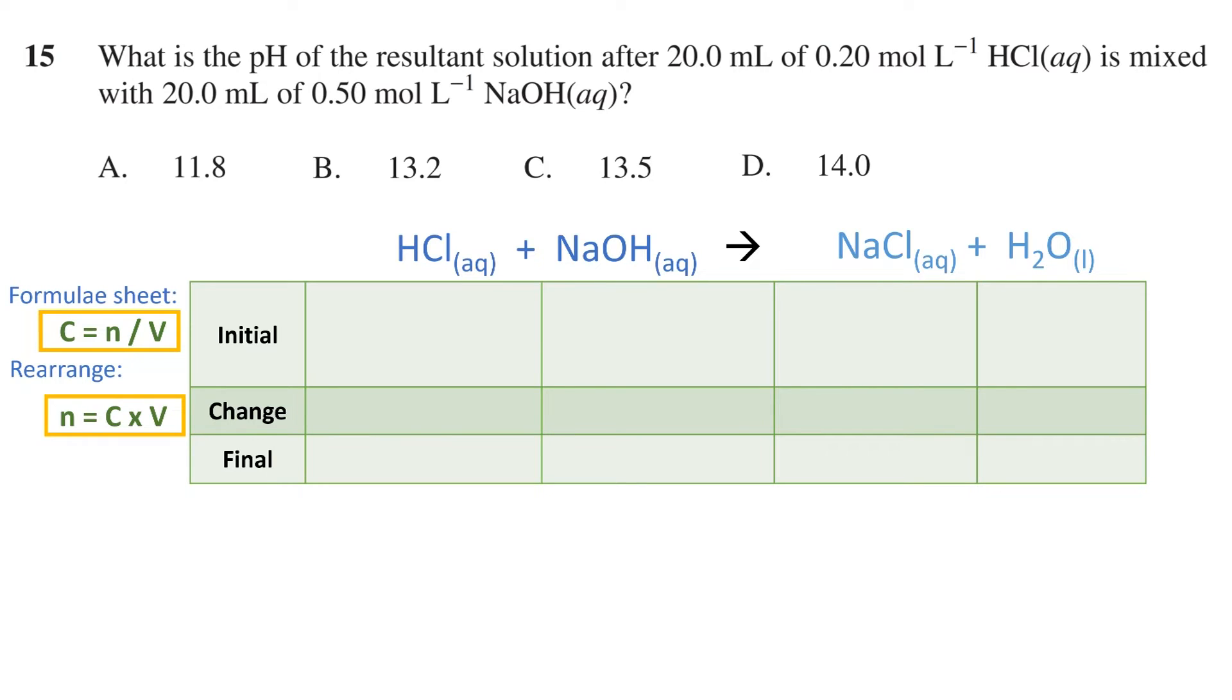To find the initial number of moles of each reactant, we follow the formula and get 0.004 moles for HCl, and 0.01 moles for NaOH. Before the solutions are mixed, we have none of the products, therefore 0 moles of each. As we saw with the visual on the previous slide, once the solutions are mixed, hydrogen and hydroxide ions will react to form water, and sodium and chloride ions are left over in solution.